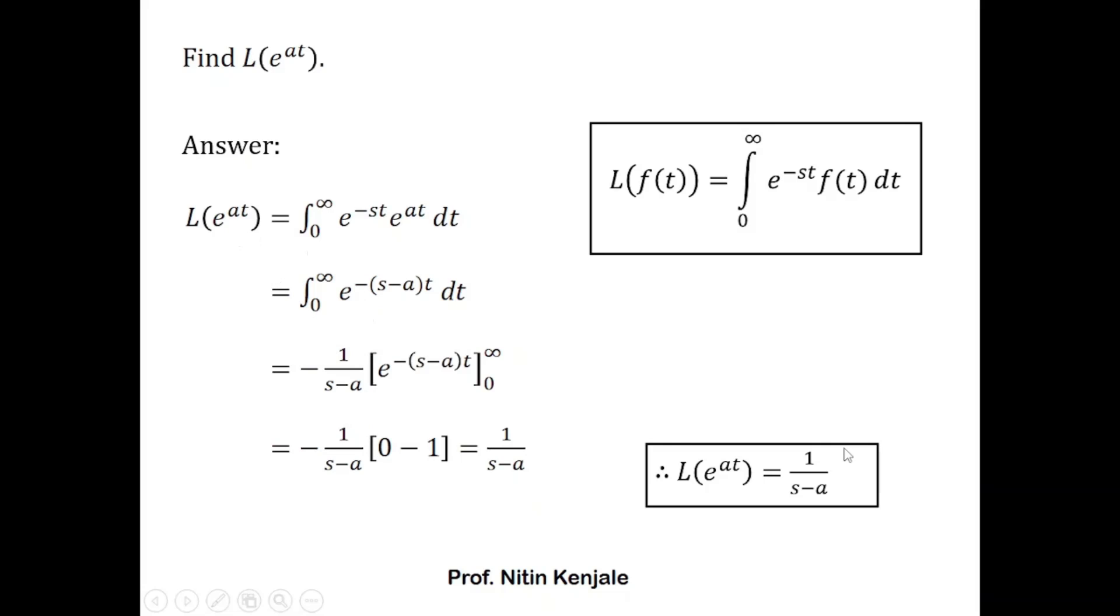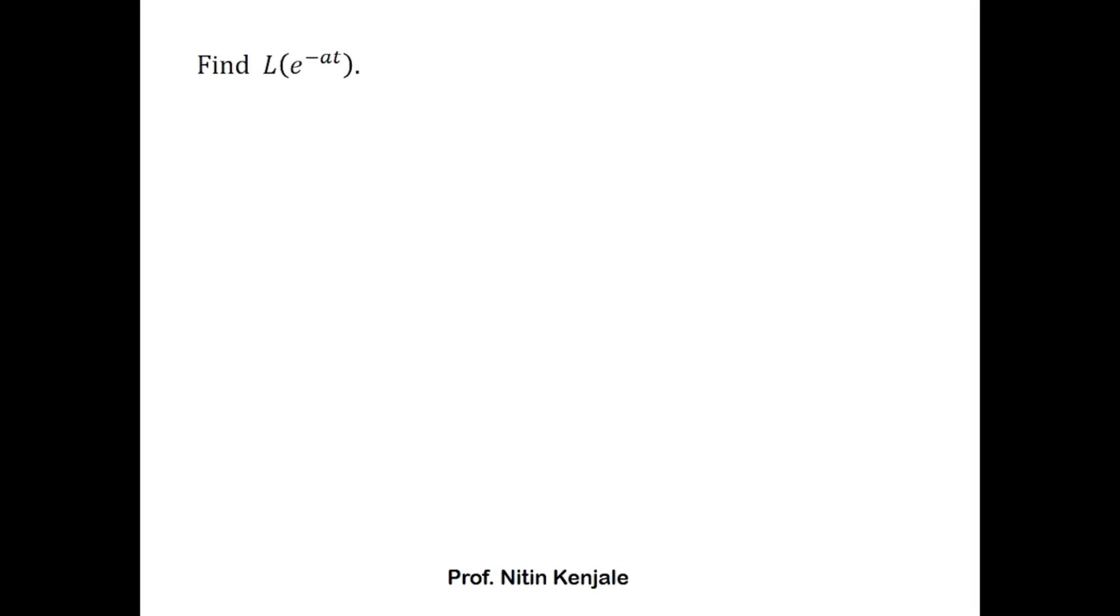Now let's see how to find out Laplace of e raised to minus at. Here parameter a is with negative sign. We already know that Laplace of e raised to at is given by 1 upon s minus a, so we simply replace this a by minus a on both the sides.